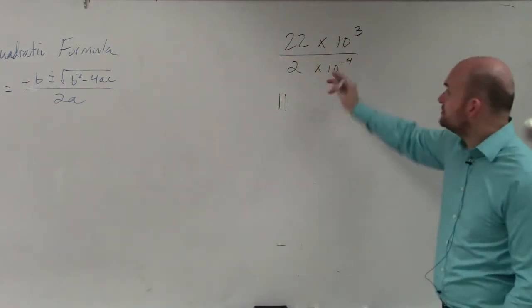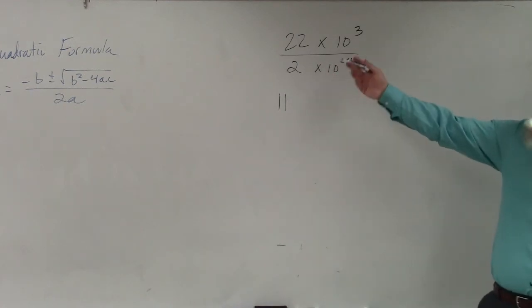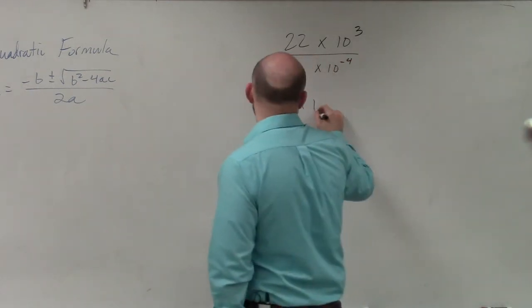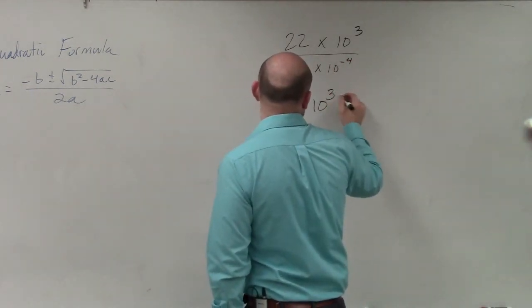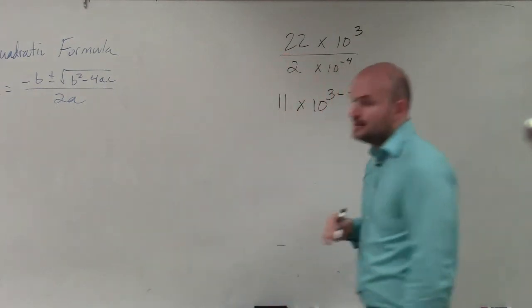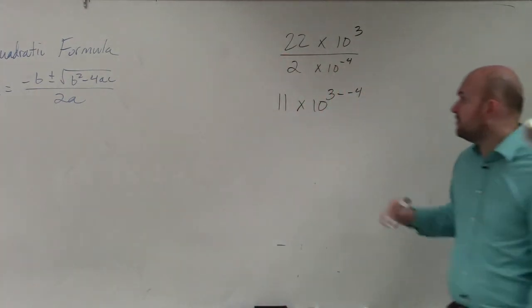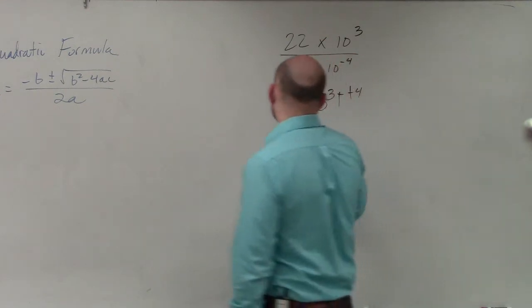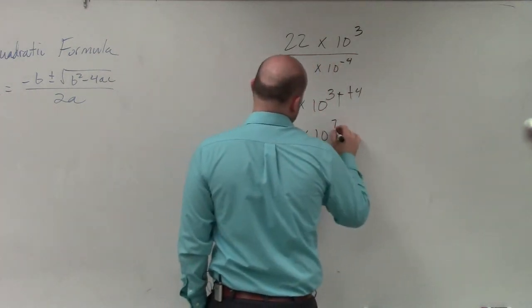And then remember, when you divide powers or exponents with the same base, you subtract their exponent. So that's 3 minus a negative 4. So since I'm minusing a negative 4, that's a double negative. So I get 11 times 10 to the seventh power.